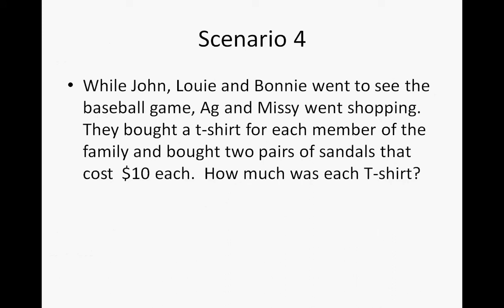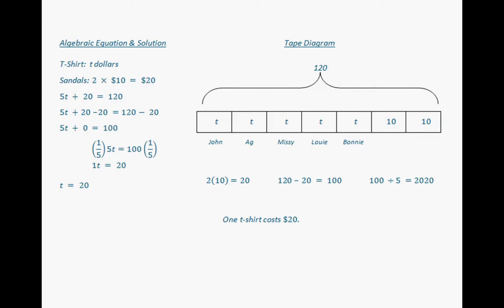For scenario four, Ag and Missy went shopping and bought a T-shirt for each member of the family plus two pairs of sandals costing $10 each. How much was each T-shirt? The tape diagram: two times 10 is 20. Take $20 away from $120, leaving $100. Divide by 5, each T-shirt costs $20. Algebraically, T-shirts are T dollars; two times 10 equals $20 for sandals. So 5T plus 20 equals 120. Subtracting 20: 5T equals 100. Multiplying by one-fifth: T equals $20.